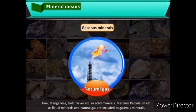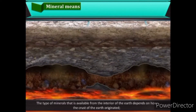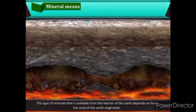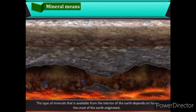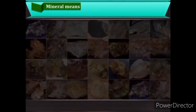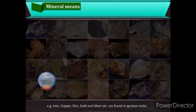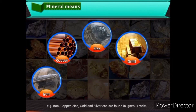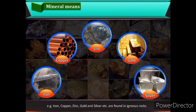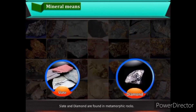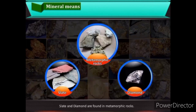Iron, manganese, gold, and silver are examples of solid minerals; mercury and petroleum are liquid minerals; and natural gas is a gaseous mineral. The type of minerals available from the interior of the earth depends on how the earth's crust originated. Iron, copper, zinc, gold, and silver are found in igneous rocks, while slate and diamond are found in metamorphic rocks.